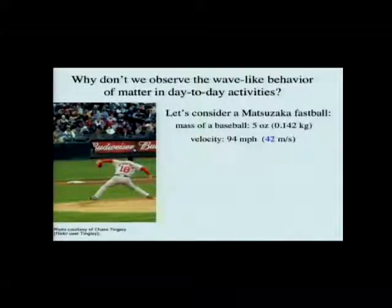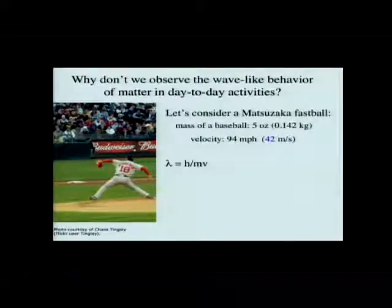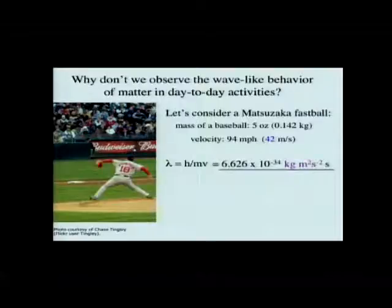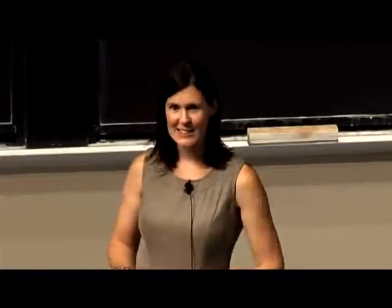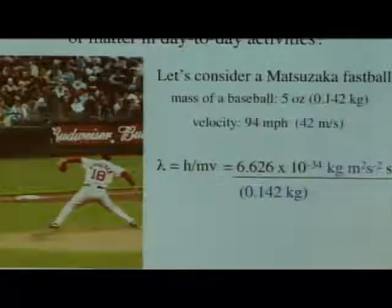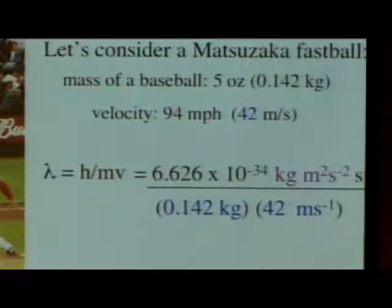So let's go ahead and look at that. If we're trying to figure out the wavelength of a Matsuzaka fastball, we need to consider the velocity first, which is 94 miles per hour — we can convert that to 42 meters per second. We can use the de Broglie relationship: wavelength equals h over mass times velocity. We put in Planck's constant, writing the joule as kilogram meter squared per second squared. We divide by the mass of 0.12 kilograms — that's the mass of a regulation baseball — and the velocity of 42 meters per second.